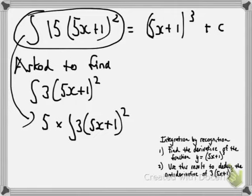5 times 3. So that could equal 5 times the integral of 3 times 5x plus 1 squared. See, I've broken that 15 up. So can you also do that just to make it 5x plus 1 plus c divided by 5? Yeah, exactly.